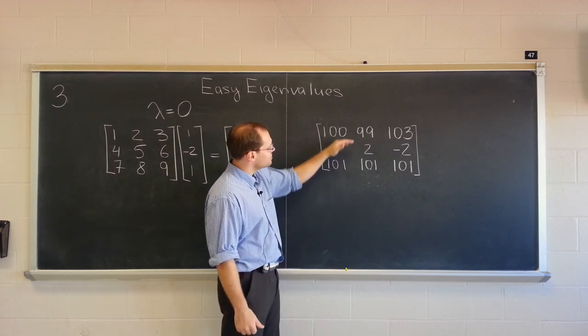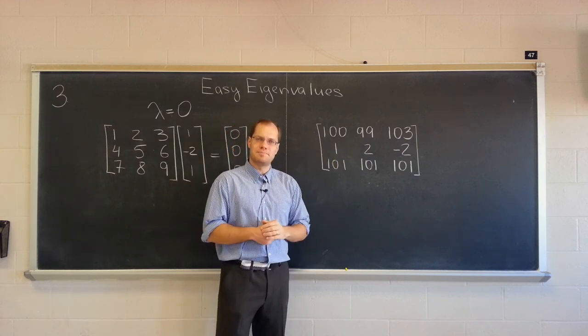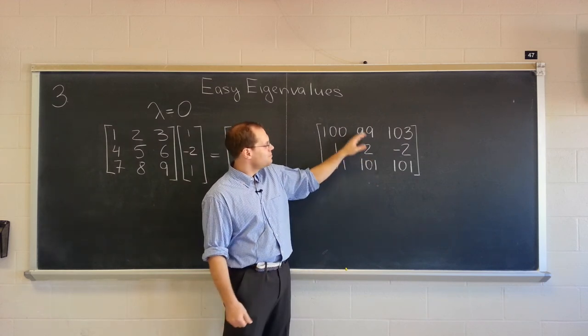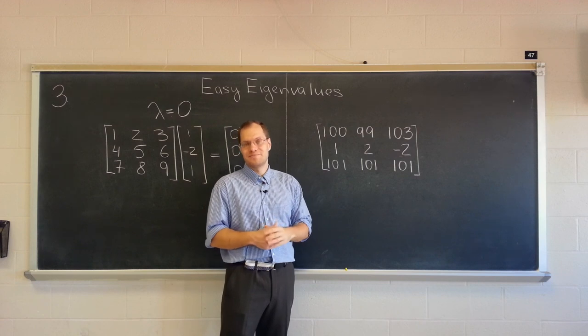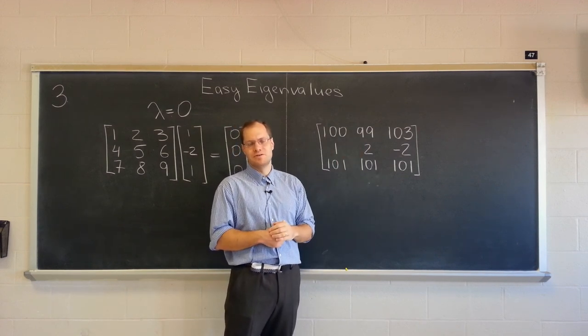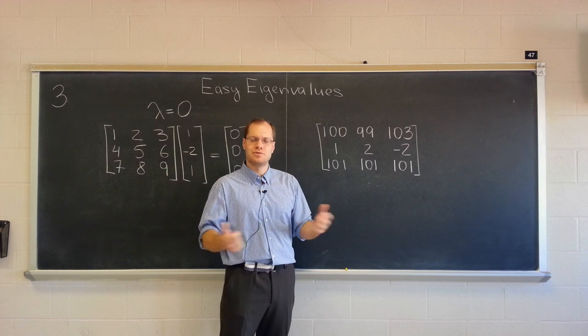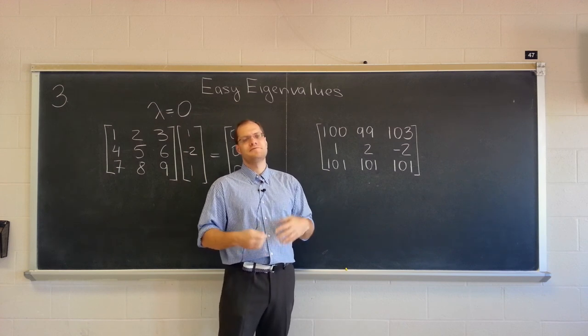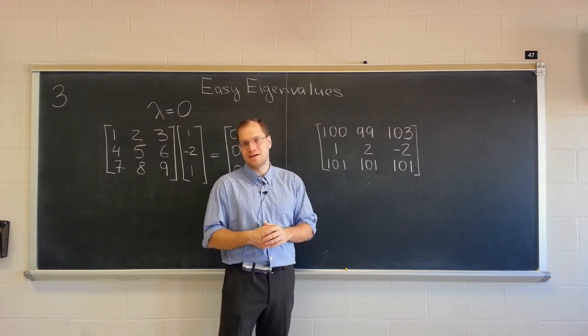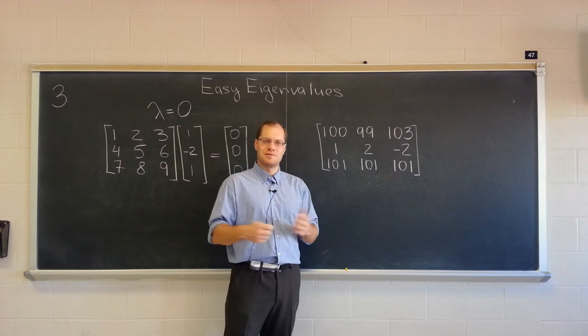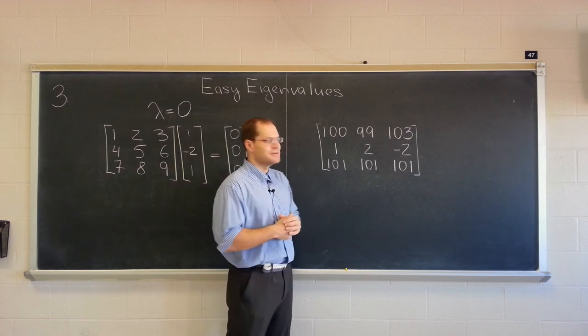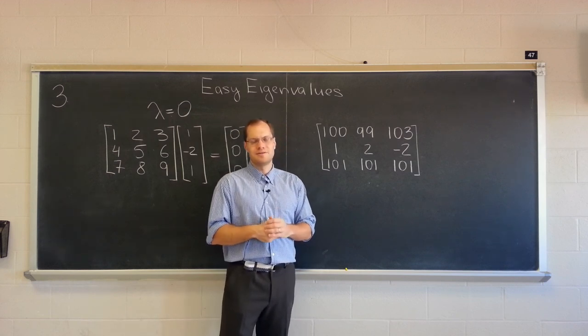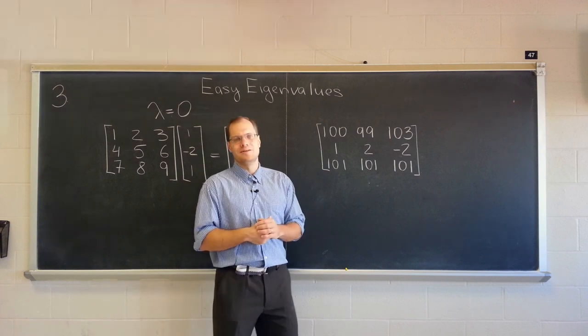So, in this matrix, we clearly have only two linearly independent rows. The third one being any third one. Any of the rows is linearly dependent on the other two. So we only have two linearly independent rows. Therefore, we only have two linearly independent columns. Therefore, there is a non-trivial null space. Therefore, there is a zero eigenvalue. And the eigenvector requires a little bit more work.